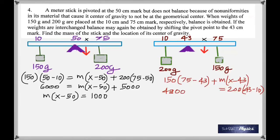Plus, you have the mass times x minus 43. And on the right side, this happens to be 6,600. So m times x minus 43 is equal to 6,600, take away 4800, which is 1800.